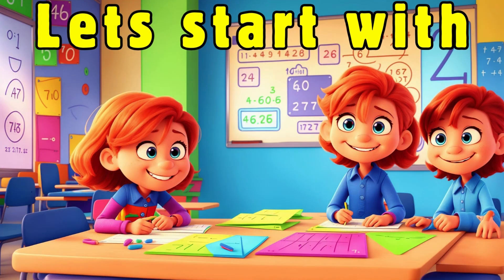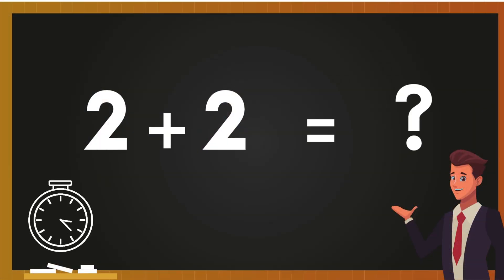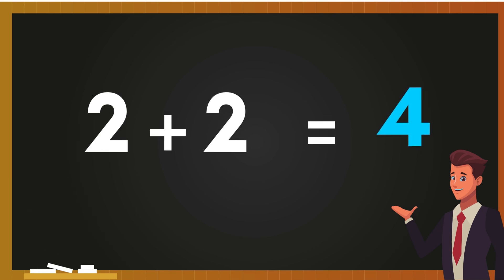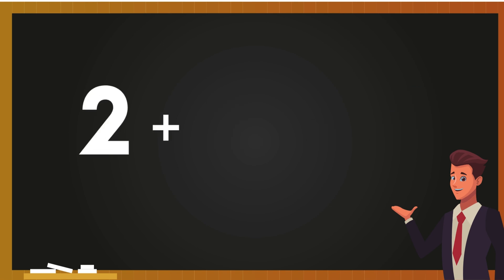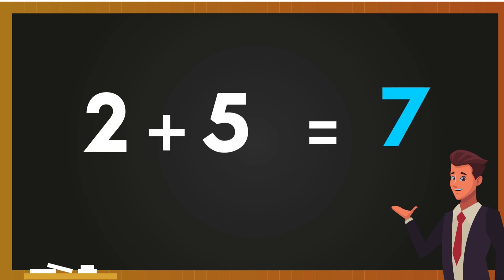Let's start with Addition. 2 plus 2 equals — That's right! 2 plus 2 is equal to 4. 2 plus 5 equals — That's right! 2 plus 5 is equal to 7.